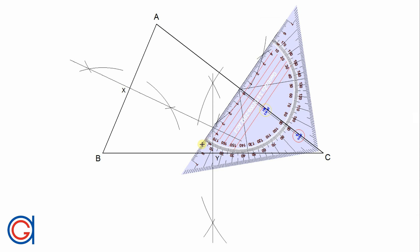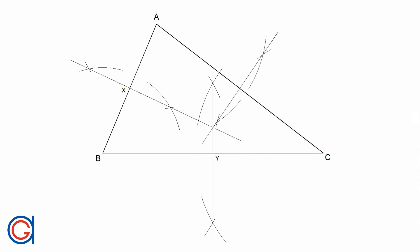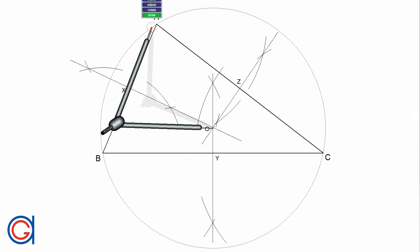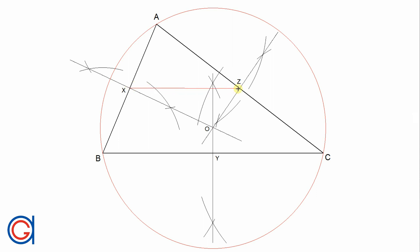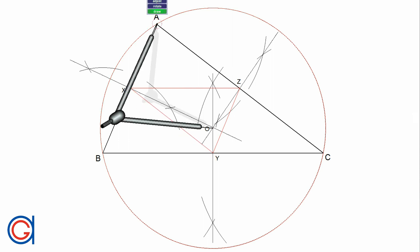Where these three perpendicular bisector lines intersect is point O, which is the circumcenter of triangle ABC. Setting our compass on O, we draw a circle — the circumcircle — which inscribes the triangle. Next, we join points X, Y and Z with a red line forming a new triangle. The nine-point center N of the given triangle ABC is the circumcenter of the red triangle XYZ.